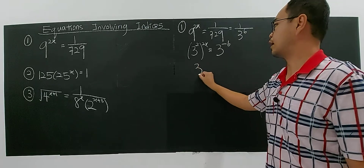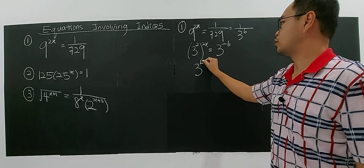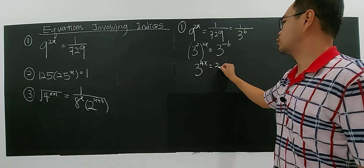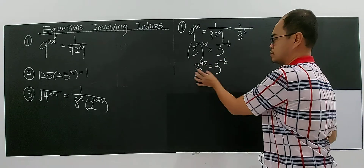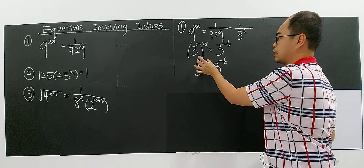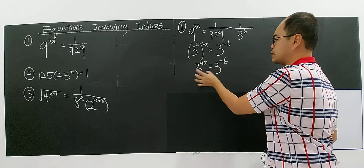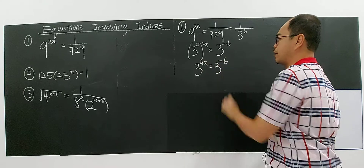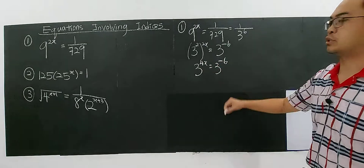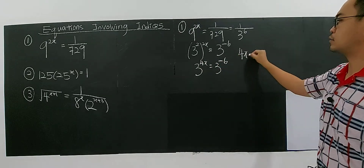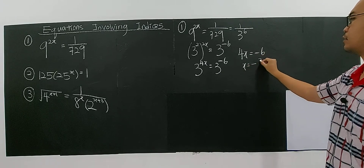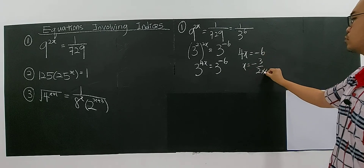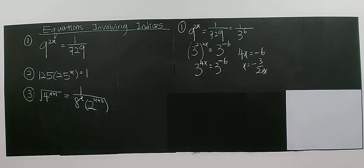So now you have 3 to the power of 4x equals 3 to the power of negative 6. Since they have the same base, we can directly compare the indices. So 4x equals negative 6, which gives x equals negative 3 over 2.